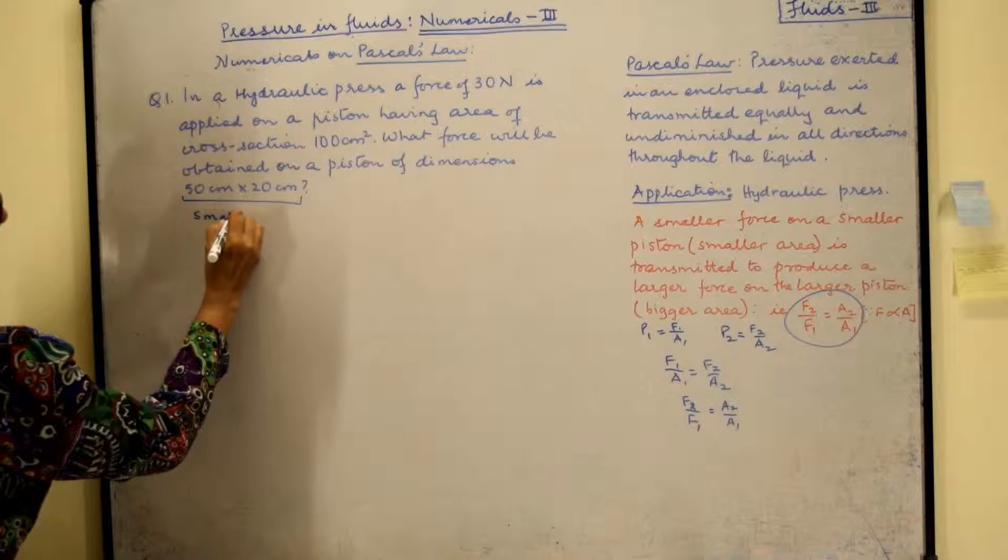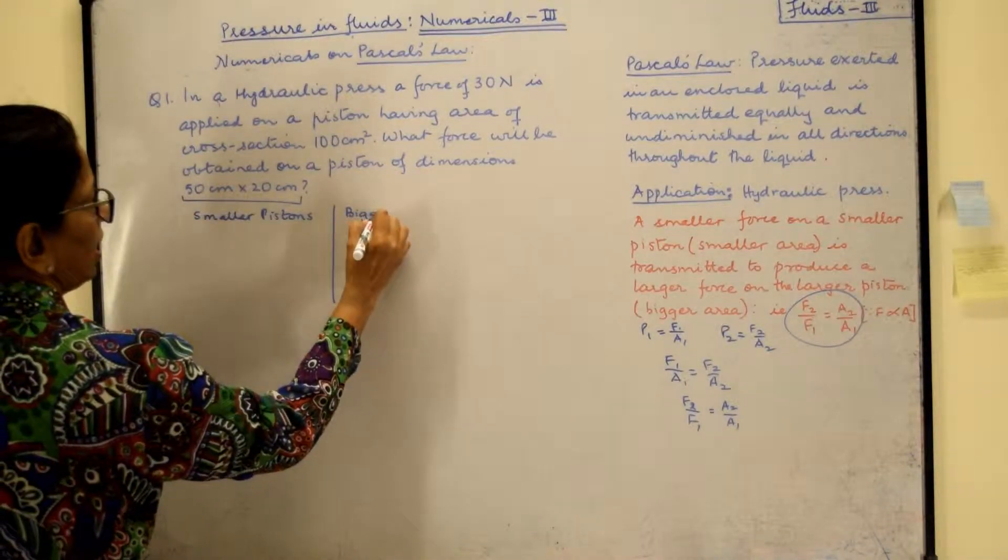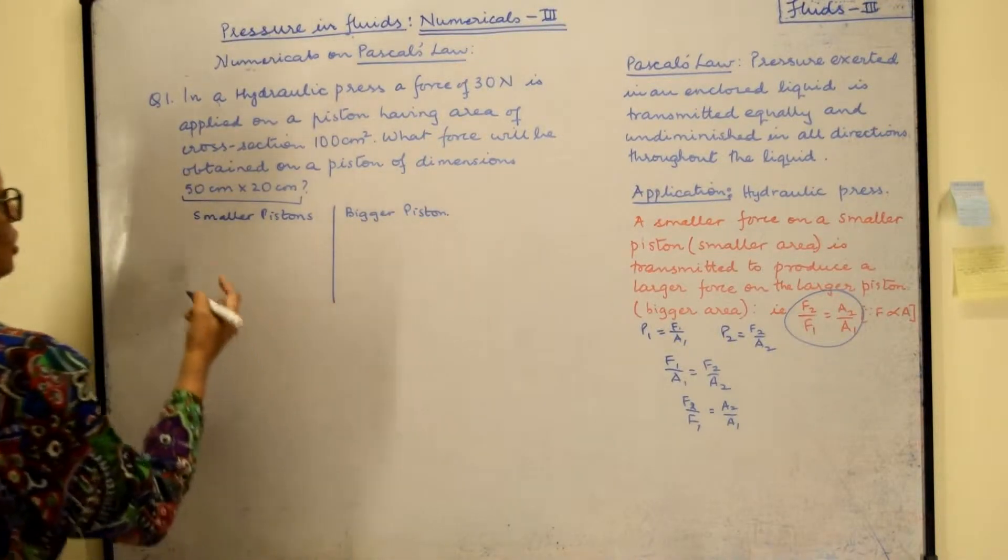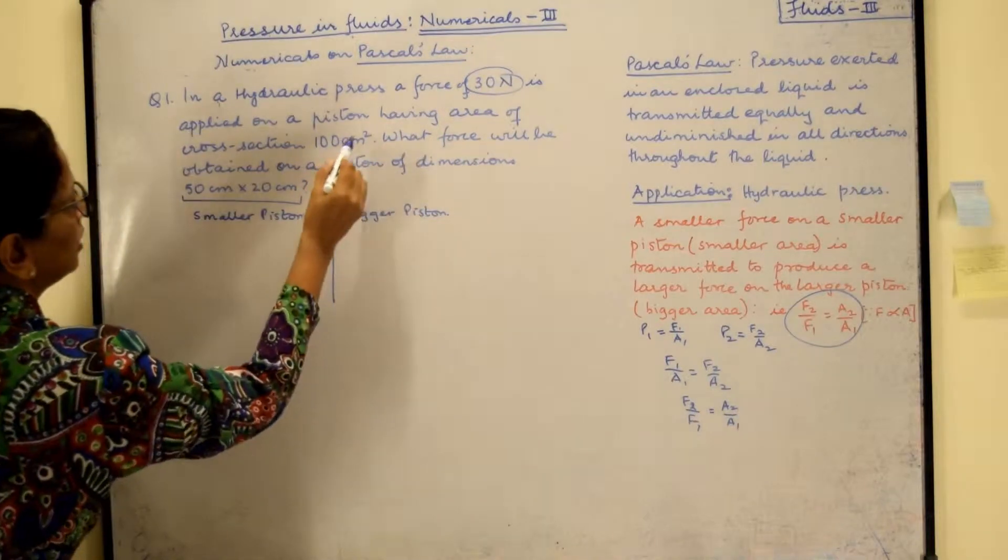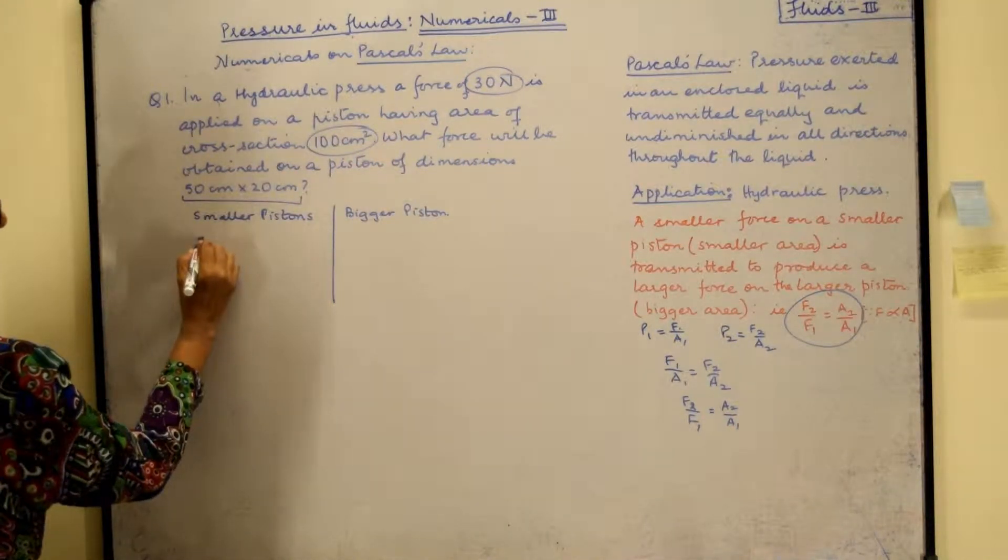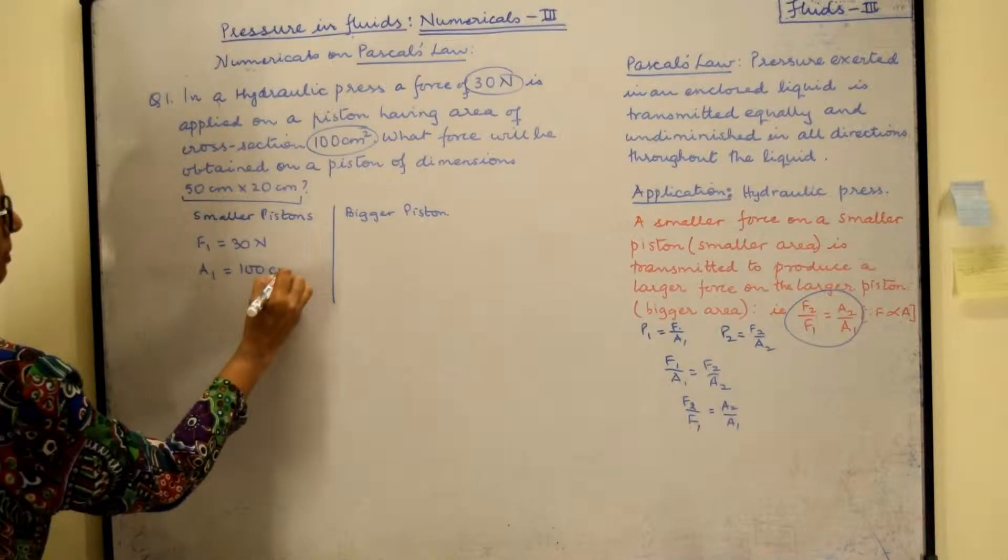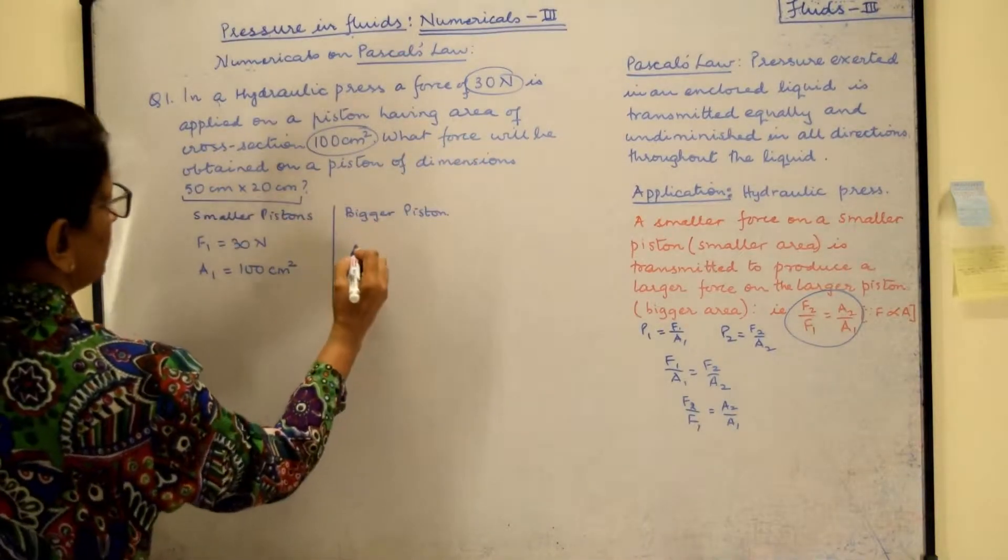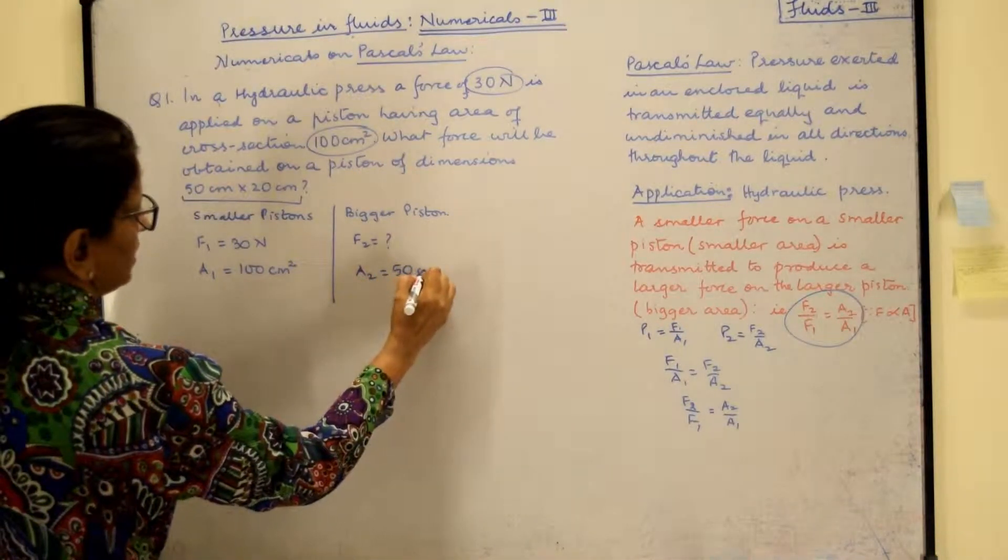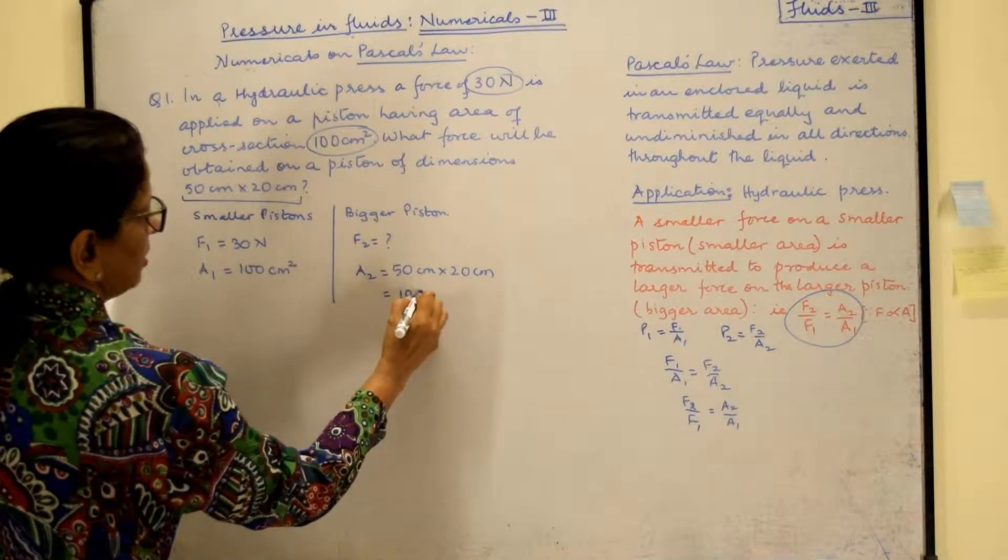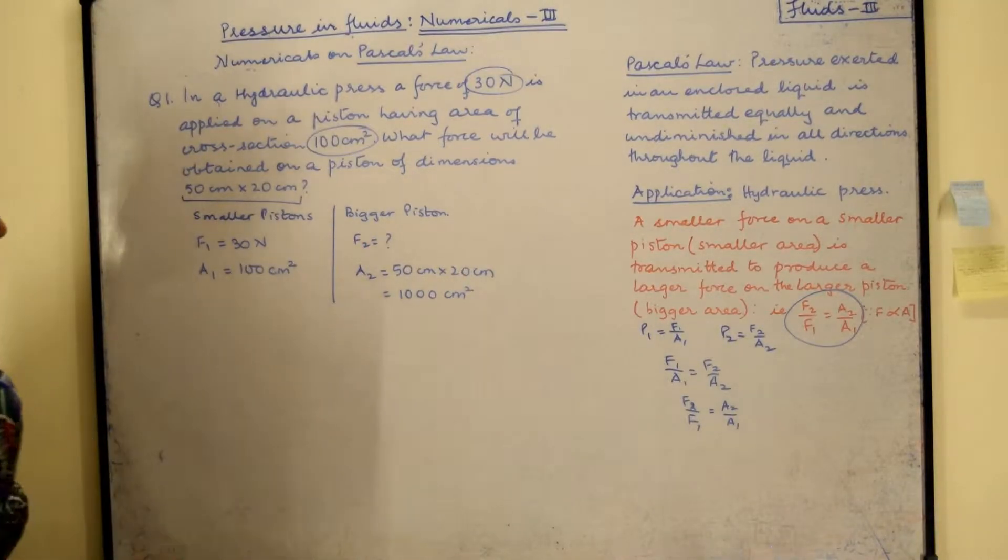So let us write the data first. Initially make sure that you have clarity of thought and just write the data for each piston. So smaller piston is going to have force of 30 newton. 30 newton is applied on this area so that will be your F1 and that is 30 newton and area of cross section. I will say A1 that is 100 centimeter square and now they are asking us what force will be obtained. So F2 is going to be how much? We have to find that and A2 is going to be equal to 50 centimeter multiplied by 20 centimeter that will be 1000 centimeter square. You need not multiply this but I have just multiplied in order to show you that this is on the bigger piston.